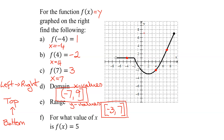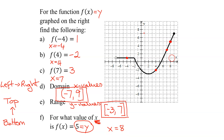Now the last part: for what value of x is f of x equal to 5? Remember, f of x equals the y value. It's giving you the y value for the point, and it's saying find the x value when y equals 5. So I look on the graph where y equals 5. Is there a point on the graph where y equals 5? Yes. And what is its x value? 8. So the answer to part f is x equals 8, because when x equals 8 on this graph, y equals 5.